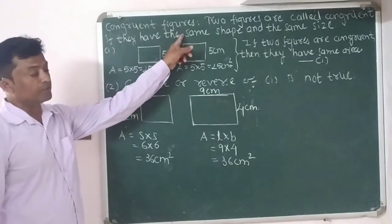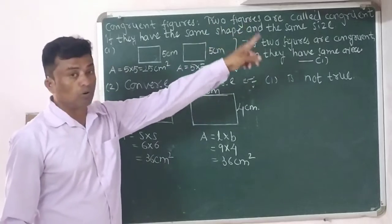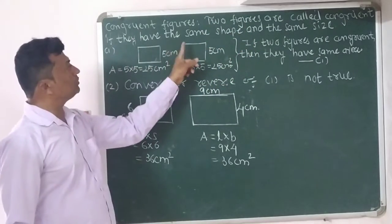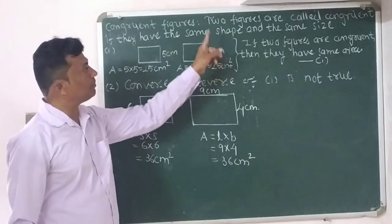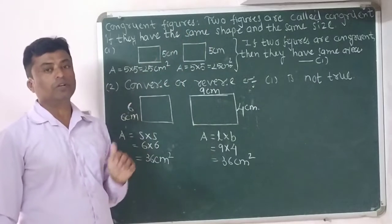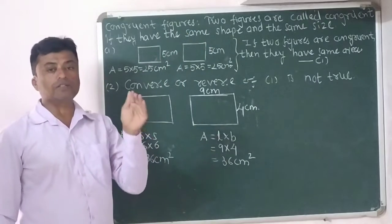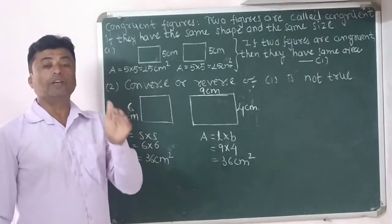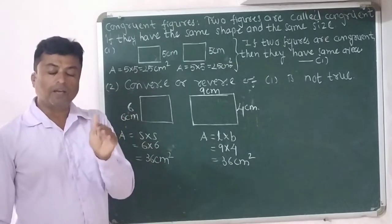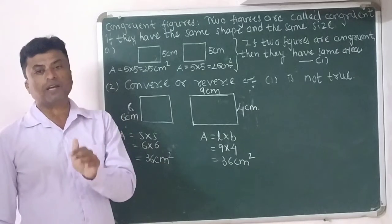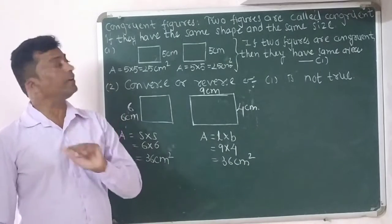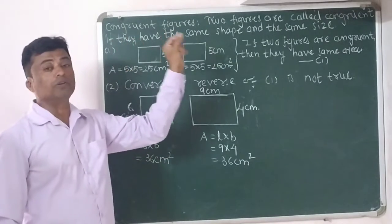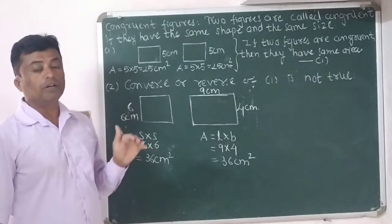Two figures are called congruent if they have the same shape and the same size. Then we can say that the figures are known as congruent figures.